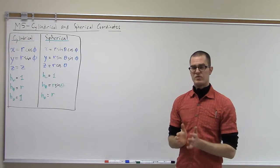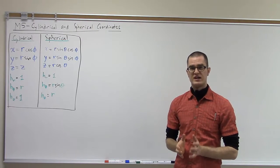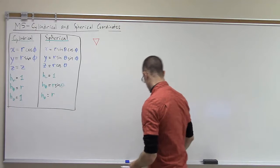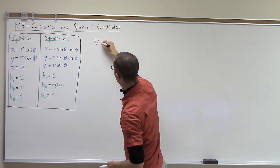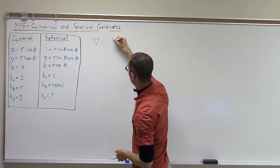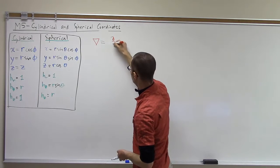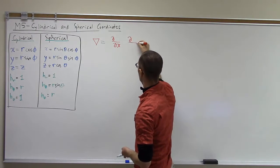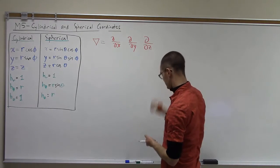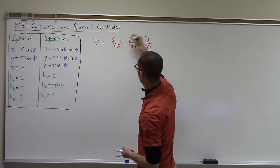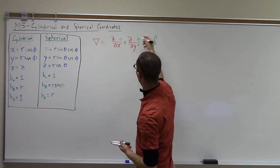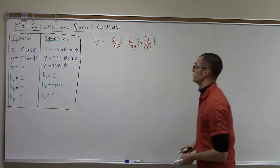Now, putting all this together, we want to also combine this with our understanding of the vector operator — the nabla symbol. We saw in the Cartesian coordinate system that this was (d/dx)i + (d/dy)j + (d/dz)k. And this was a vector of derivatives.